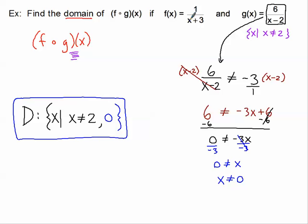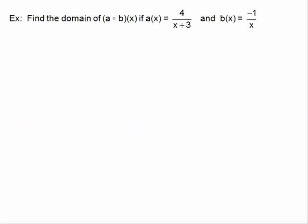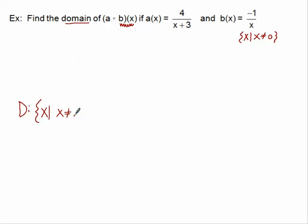So that's finding the domain of a composition. I'd like to do one more example to make sure you understand this concept. I've got a of x and b of x, and I'd like to find the domain of a of b of x. Again, first thing — our sights are on b of x. Looking at this function, I can see right now that x cannot be 0, because we cannot have a 0 in the denominator. So I'll start writing my final answer: the set of all x's such that x cannot be equal to 0.